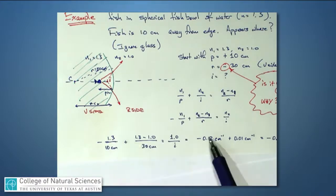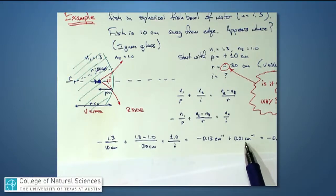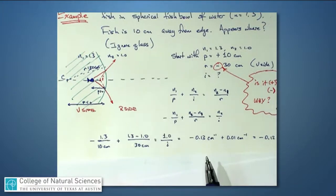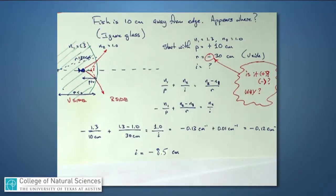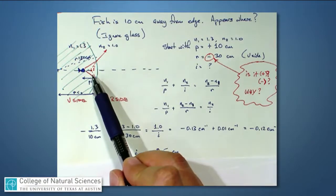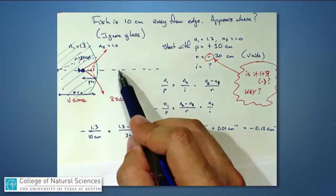Plugging these numbers into the calculator: the first term is minus 0.13 inverse centimeters, and the second term is 0.3 over 30, which is positive 0.01 inverse centimeters. The sum of those two is minus 0.12 inverse centimeters, and that equals 1.0 over I. So I works out to be approximately minus 8.5 centimeters. That means the image is on the left side of this boundary — on the V side — because I is negative.